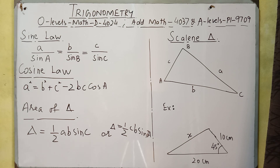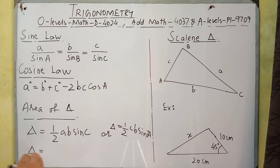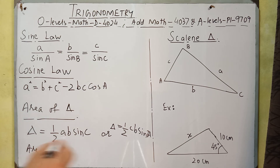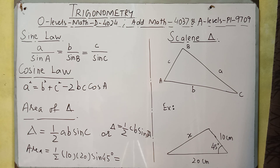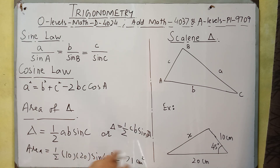For example, to calculate the area of the triangle with sides 10 cm and 20 cm with a 45° angle between them: Area equals ½ times 10 times 20 times sin 45°. Using a calculator, we get approximately 70–71 cm².